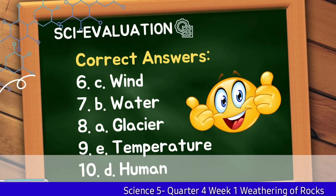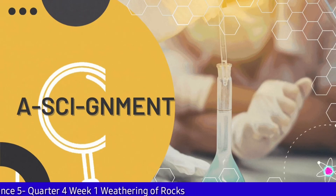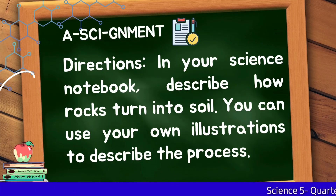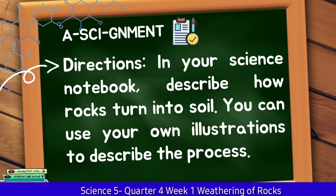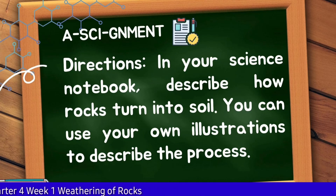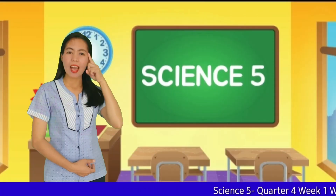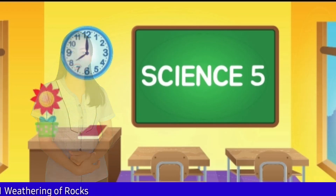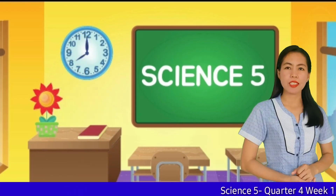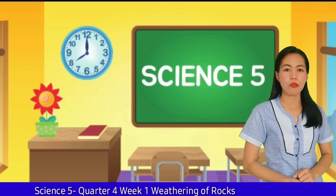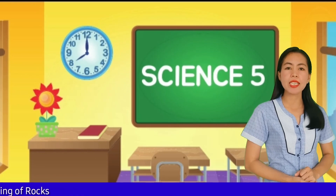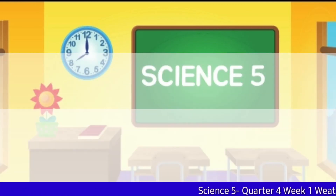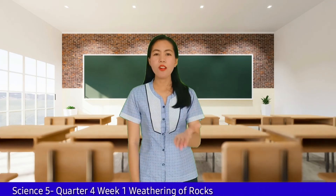For further understanding, let us have an assignment. In your science notebook, describe how rocks turn into soil. You can use your own illustrations to describe the process. Let us remember: weathering is an important process that helps shape the earth's surface. The breaking of rocks results in the formation of soil and different landforms. This is also the reason we have amazing rock formations. That's all for today, learners. Thank you for exploring science with me. See you soon in the next episode!